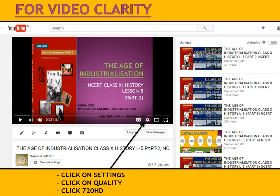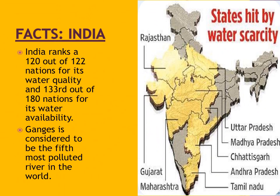Students, do you know that when we study 122 countries, India's rank was 120 in terms of its water quality, i.e., our country's water quality is very bad. And when we study 180 nations, our rank was 133 in terms of water availability, i.e., our country has a lack of water.